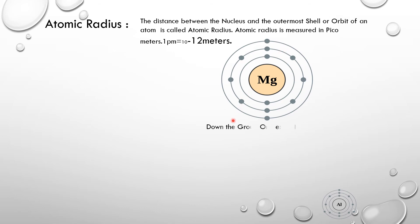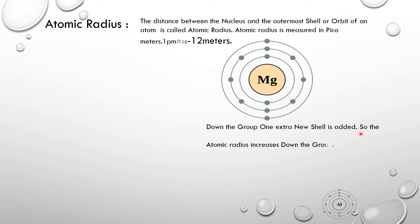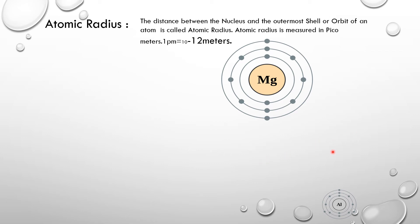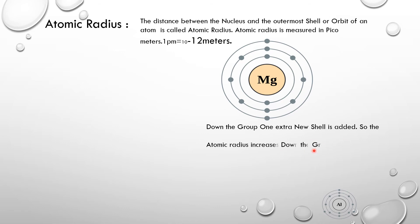Down the group, one extra new shell is added when you go down the group. So the atomic radius increases down the group. One extra shell is added in addition to the previous one, and therefore the atomic radius increases down the group.